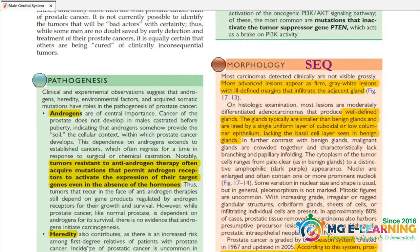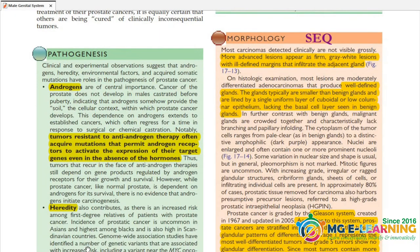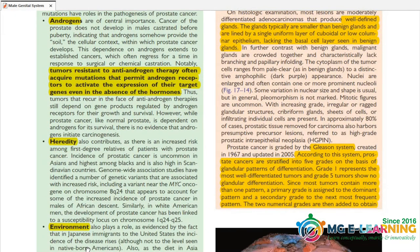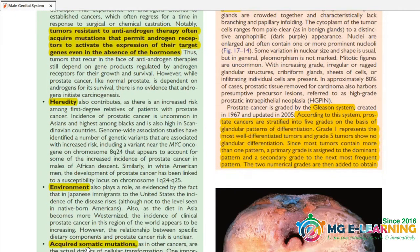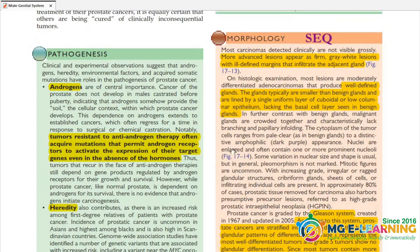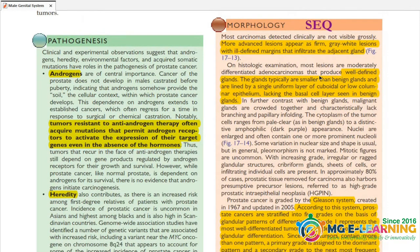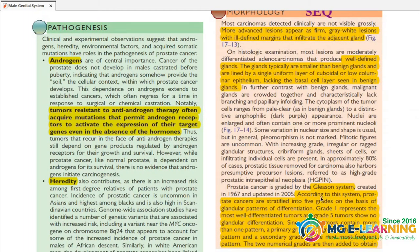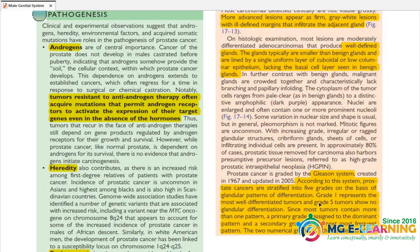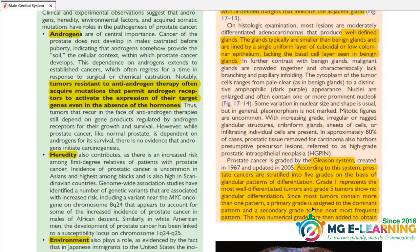Androgens play a causative role. Hormone treatment has a significant role in the environment of prostate cancer. The morphology of carcinoma of the prostate is very important.